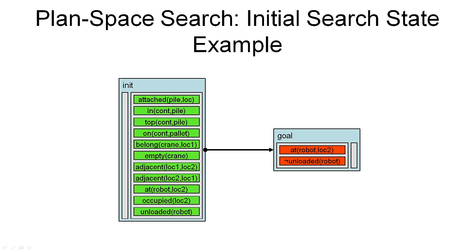Here is our empty plan in a pictorial representation. We have the two dummy actions, init and goal — these are the two actions in this plan, and each action consists of preconditions and effects. The preconditions of init are empty, and the effects of goal are also empty. What we see are the initial propositions from our initial state and the goal conditions from our planning problem. We also have the ordering constraint saying that init has to come before goal. That's the empty plan.